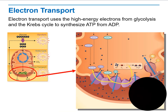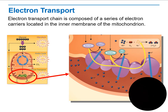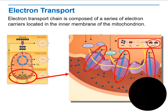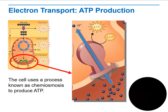Electron transport uses the high-energy electrons from glycolysis and the Krebs cycle to synthesize ATP from ADP — adenine diphosphate — to produce adenine triphosphate. The electron transport chain is composed of a series of electron carriers located in the inner membrane of the mitochondrion. The cell uses the process known as chemiosmosis to produce ATP.